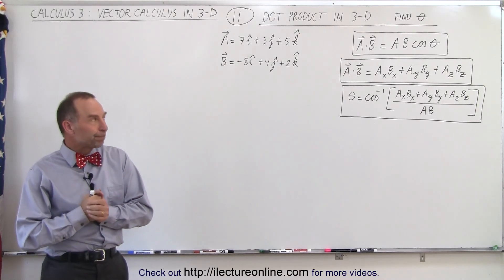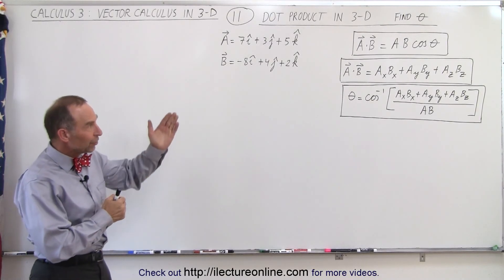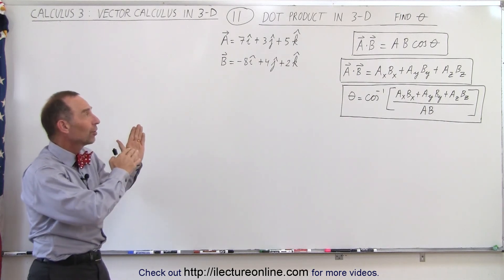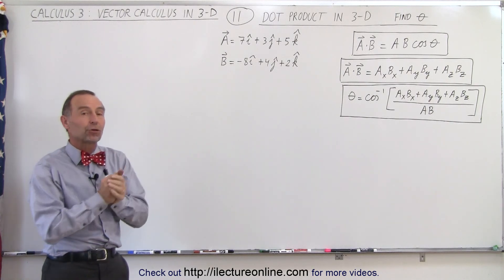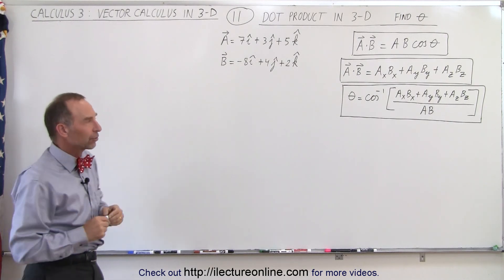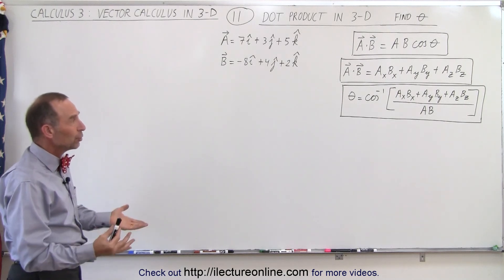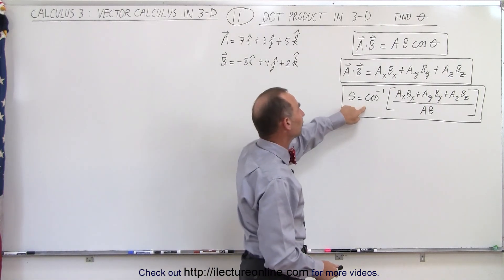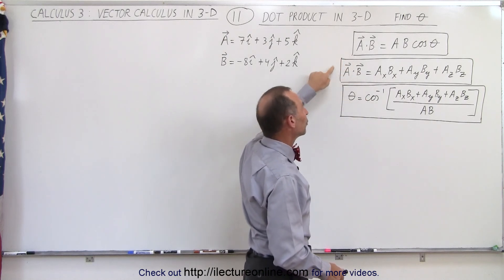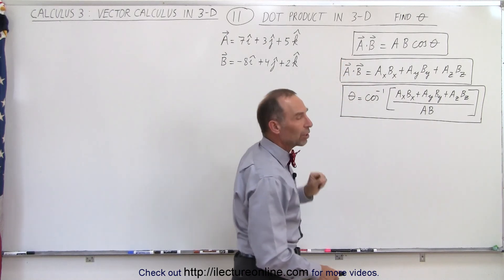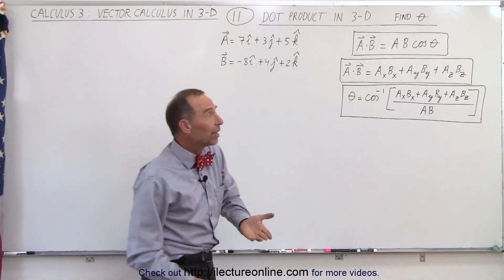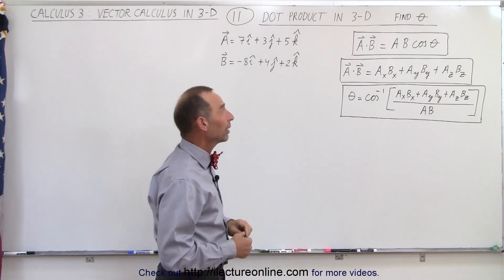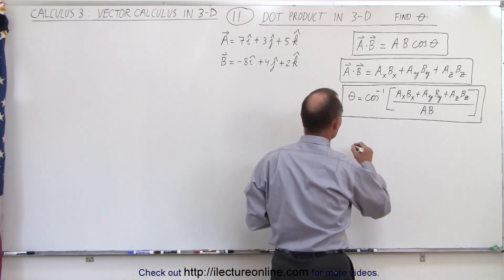Welcome to our lecture online. Given the three equations from the previous video and two vectors, we're trying to determine the angle between the two vectors. Before we can find that angle, we need to find the dot product using both equations, and before that, we need to find the magnitude of A and the magnitude of B.